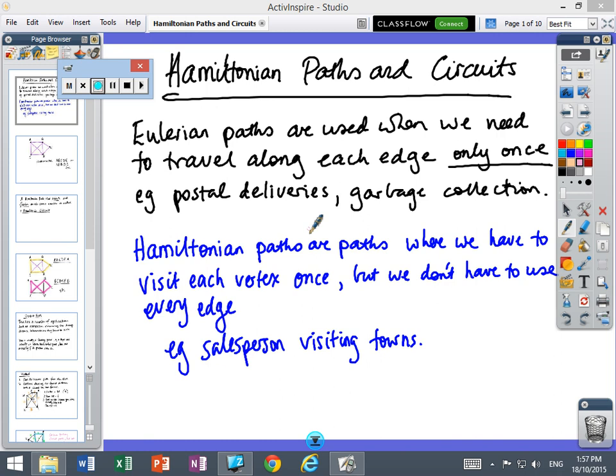So last week we had Eulerian paths and that's when we have to shovel along each edge only once, like postal deliveries or garbage collecting. But the difference now is Hamiltonian paths are paths where we have to visit each vertex once only, but we don't have to use every edge. So if you were a salesperson and you had to visit all your towns, you don't want to travel along every road. You just want to get there as quick as you can. So you visit towns and use the shortest distances. Copy that down and when you're ready, you can press play again.